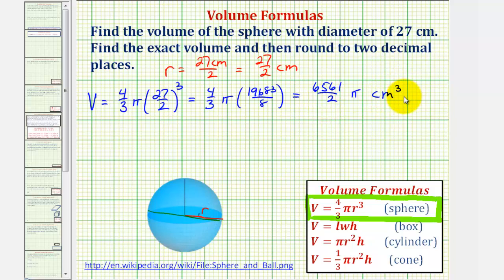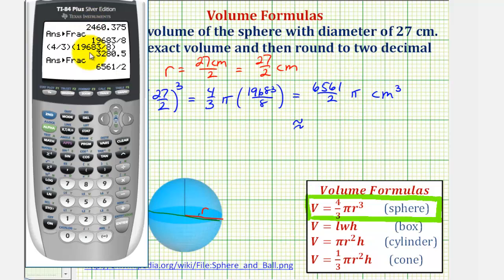Now let's also get our decimal approximation. It is common to use 3.14 as an approximation for pi, but we're going to use the pi key on the calculator for more accuracy. So again, we have our fraction, 6,561 divided by two in parentheses, and then times pi. We press second caret, this brings up the pi, enter.